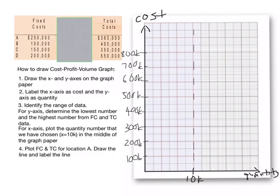Number four, plot fixed cost and total cost for location A. For fixed cost, location A is 250k, so 250k will be plot at y-intercept. For total cost, we will plot at 10k line. After that, draw the line and label the line.